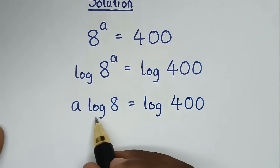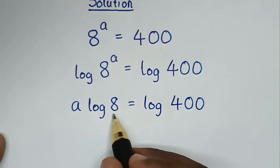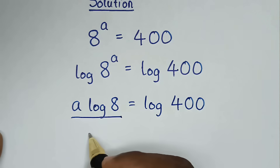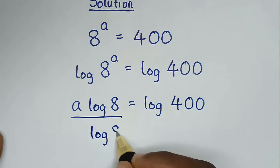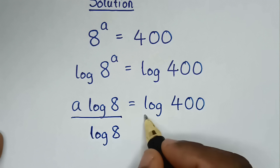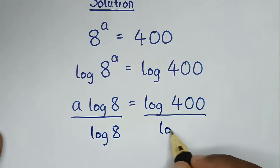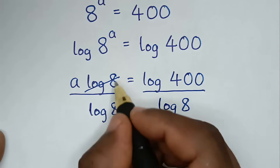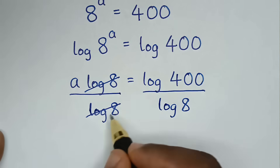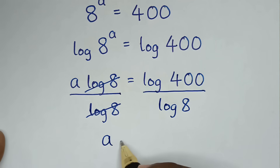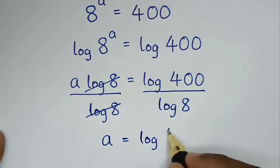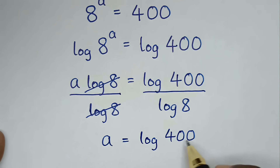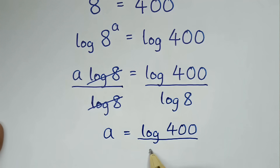Then, we will divide by log of 8 on both sides. So it will be over log of 8 on this side and over log of 8 on that side. So log of 8 cancels, and it will be a is equal to log of 400 over log of 8.